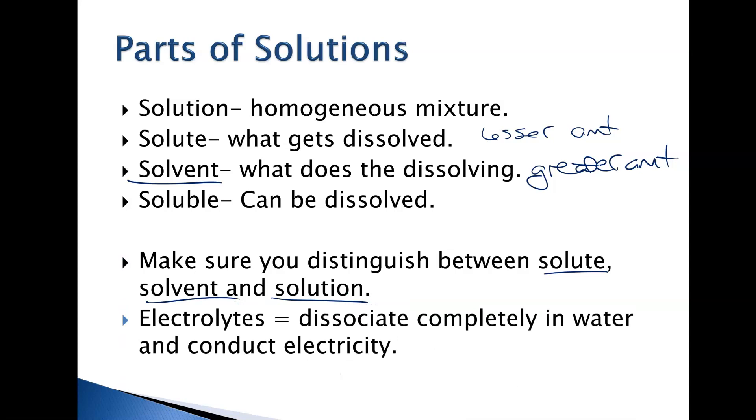Electrolytes are things that will dissociate completely in water and conduct electricity. These are ionic compounds, things like NaCl salt, or CaCl2, which is Ca2+ and 2Cl-. Those guys, because they're ions and they're free to move and they dissolve in water, they can conduct electricity.